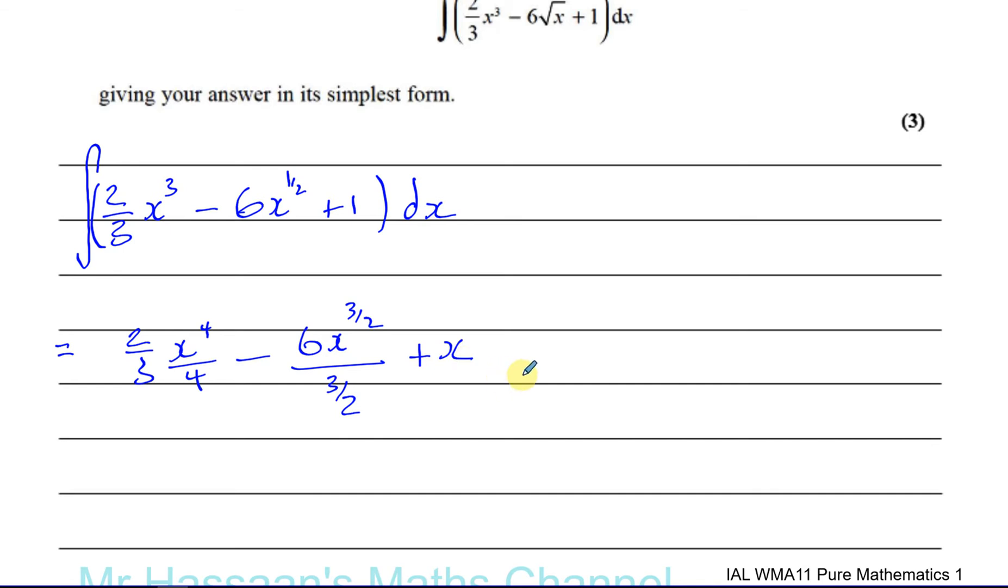And then you have to always write plus c when it's an indefinite integral because remember the reverse of this is differentiating. So when you differentiate a constant, it becomes 0. So if you're doing the opposite, there could have been a constant that was differentiated to become 0. So you have to write plus c, called the constant of integration. That constant must be written down there, you normally write plus c.